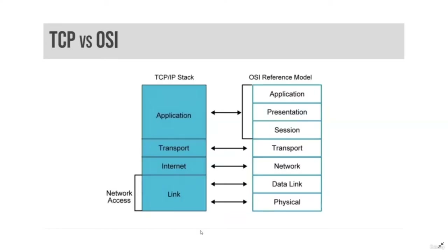The Internet layer of the TCP/IP model aligns with Layer 3, or the network layer of the OSI model. This is where IP addresses and routing live. When data is transmitted from a node on one LAN to a node on a different LAN, the Internet layer is used. IPv4, IPv6, ICMP, and routing protocols, among others, are Internet layer TCP/IP protocols.